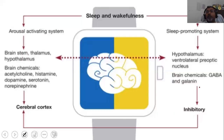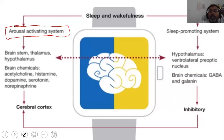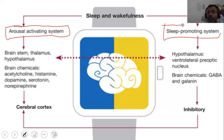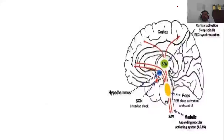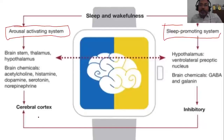Sleep and wakefulness are managed by two different systems in our body. One system is called the arousal activating system, and the other system is called the sleep-promoting system. These are the two systems in the brain that manage sleep and wakefulness.